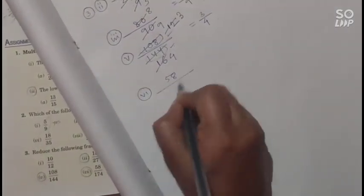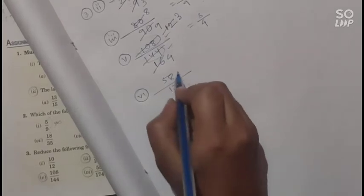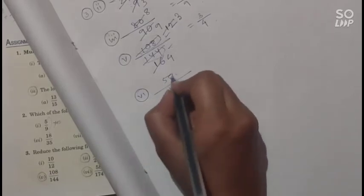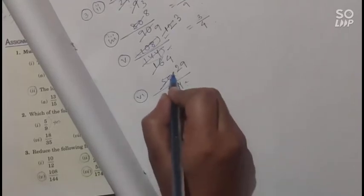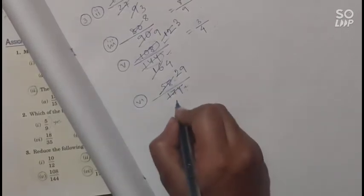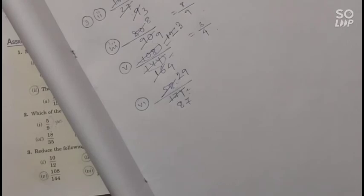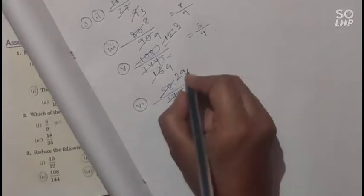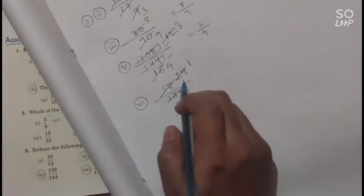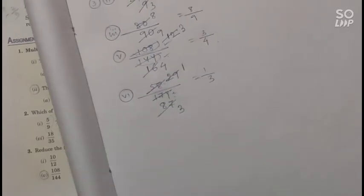Question number 6: 58 upon 174. The ones digit of 58 is 8 and of 174 is 4, so both are divisible by 2. Dividing 58 by 2 gives 29, and 174 by 2 gives 87. Now 87 divided by 29 gives 3, and 29 divided by 29 gives 1. So 1 upon 3 is the actual answer.